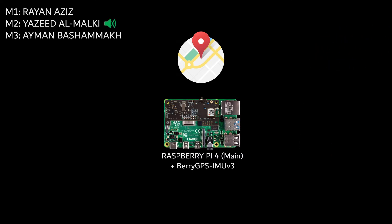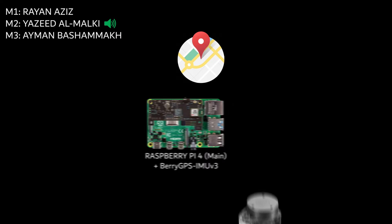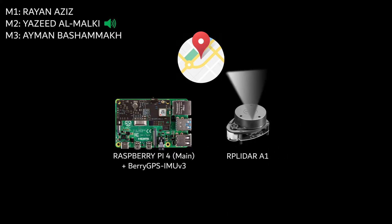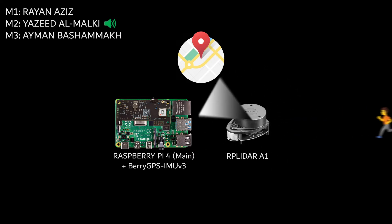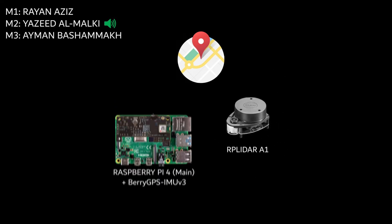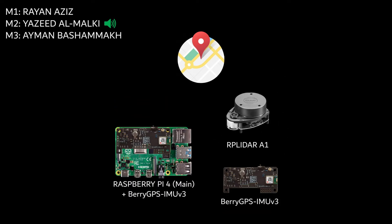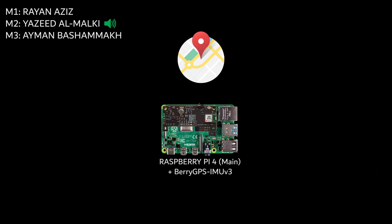The second part is the obstacle detection, which uses a LIDAR that will continuously scan the car surroundings to check for objects that the car might crash into. Both parts share a second single board computer, a Raspberry Pi 4, that is also the main computer in our system.